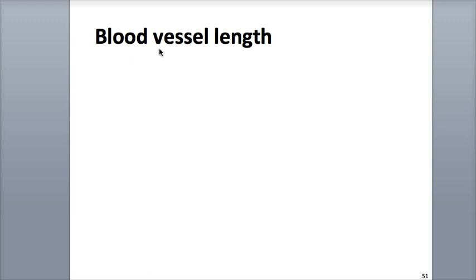The length of a blood vessel also plays a role in vascular resistance. The longer the blood vessel, the higher the resistance. In obese people, hypertension, or high blood pressure, is often caused by the extra blood vessels in their adipose tissue, which increase total blood vessel length. For every extra pound of fat, there is an additional 200 miles of blood vessels.